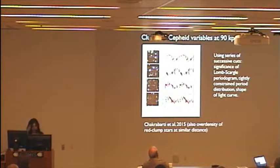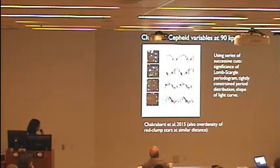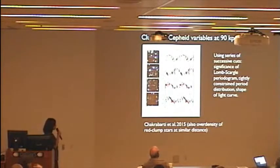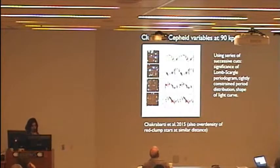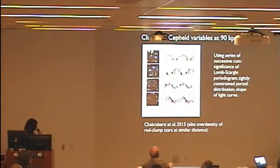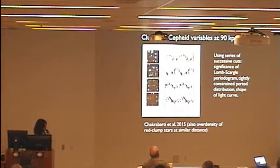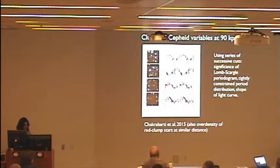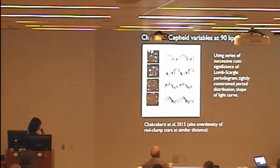I'm using the period-luminosity relation of Cepheids in the near-infrared K band. Near-infrared light curves have been known to be challenging in terms of classifying variables, so I used a series of successive cuts to filter out false positives. First, I required high significance in the Lomb-Scargle periodogram. For sources that pass that first test, I then require a very tightly constrained period distribution — I do a parametric bootstrap and only retain sources with a fairly narrow width in the period histogram. Finally, I look at the shape of the light curve and retain sources that have Fourier parameters consistent with known Cepheid variables as observed in the K band.